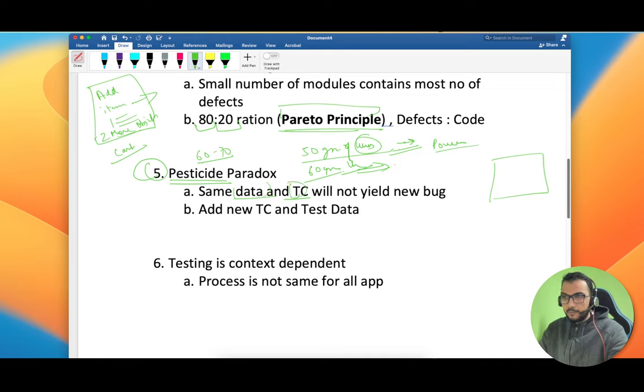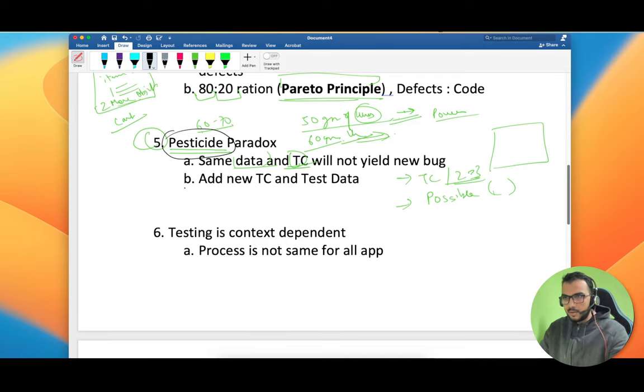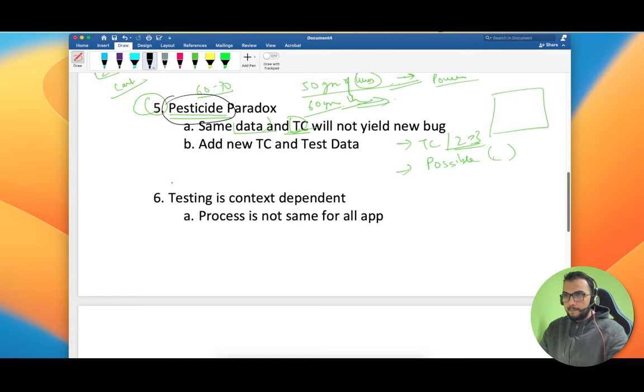The solution to this problem is that you can write test cases after two to three sprints, try to add new test cases, or possibly change the tester because there is something called tester mindset. Different set of people can find different set of bugs working on the same test cases. This is what pesticide paradox says: after a certain time the same test cases and same data will not yield you desired amount of result or bugs.